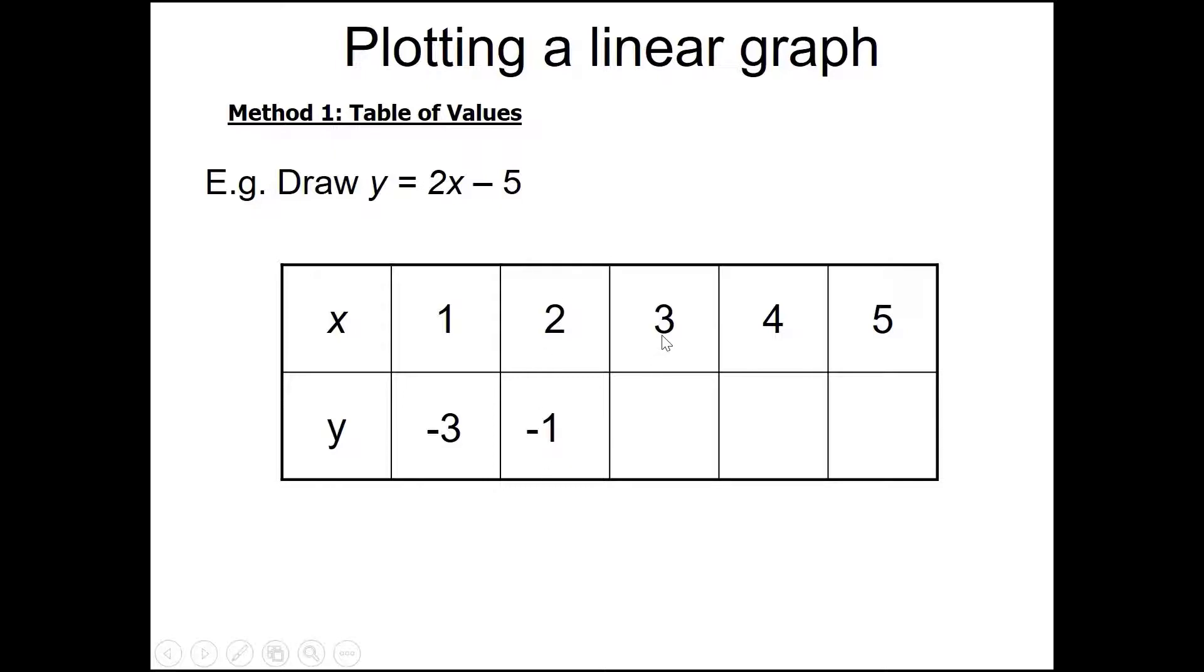Then we go on to the next one 3 times 2 is 6. 6 take away 5 is 1. So you can see there is a linear pattern there. So it will either increase or decrease by a constant amount and that will be the gradient value in this case. And then we go to the next one 4 times 2 is 8. 8 take away 5 is 3. Or you would have guessed it. It keeps going up by 2.